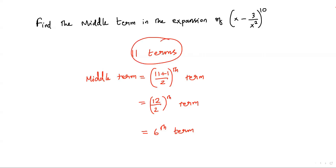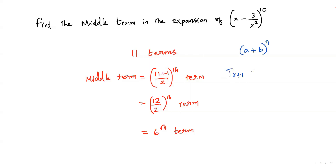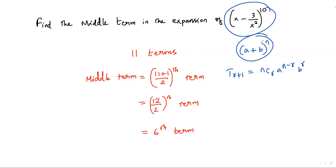We already know the formula for the (r + 1)th term of a binomial expansion. For (a + b)^n, the formula for the (r + 1)th term is: nCr · a^(n−r) · b^r. Comparing with our problem, a = x, b = −3/x², and n = 10.